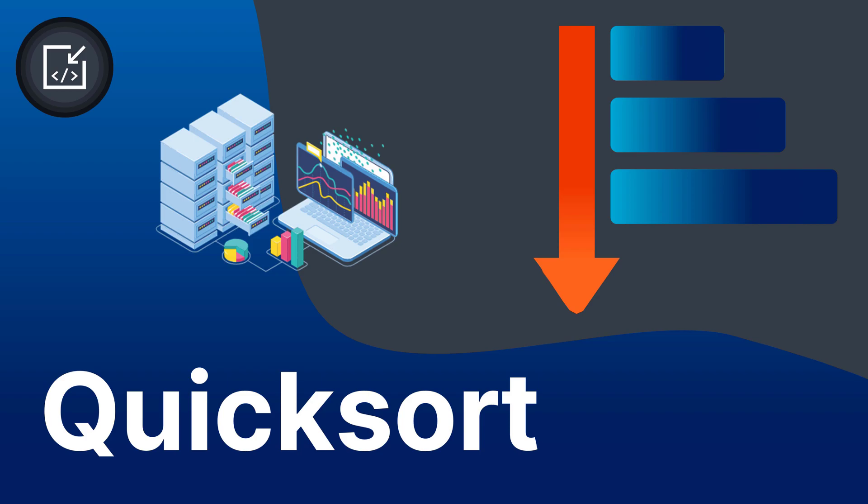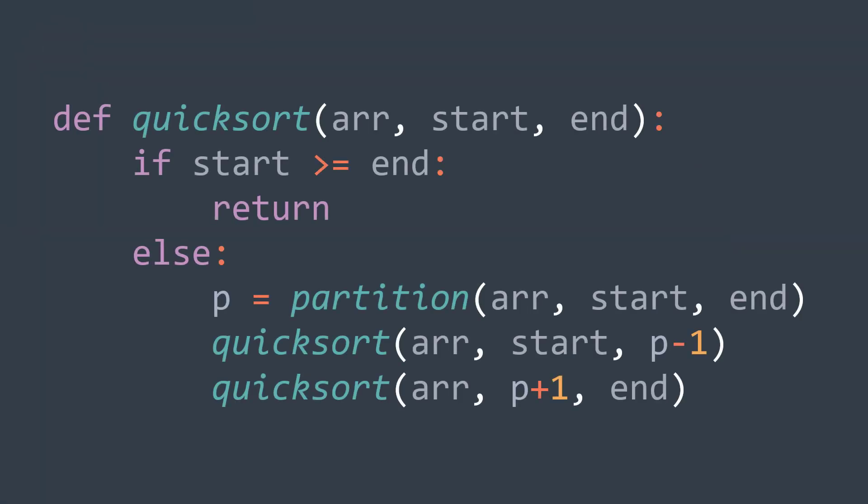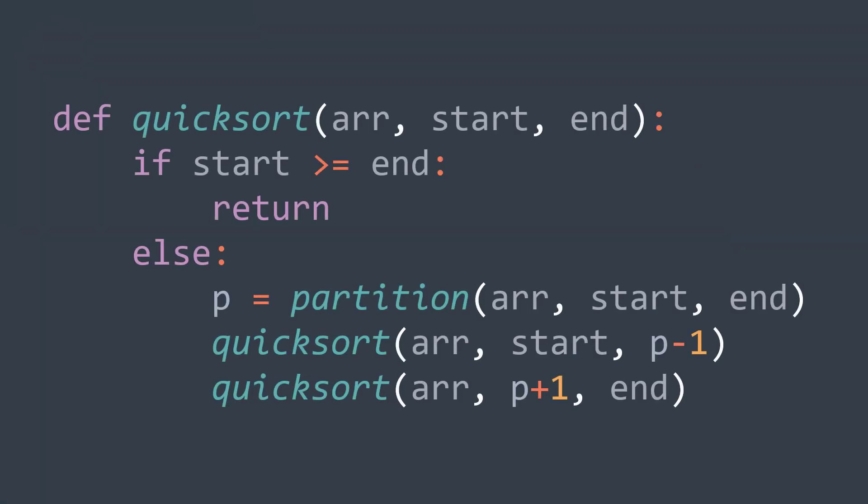The idea of quicksort is that it chooses a pivot from the array, then it partitions the array into two parts: a part where elements are smaller than the pivot, and a part where elements are greater than the pivot. We then recursively do the same thing to the part before the pivot and the part after the pivot. At the end of the recursive process, the array becomes sorted.